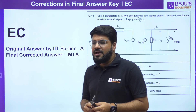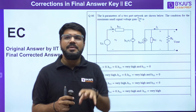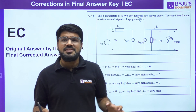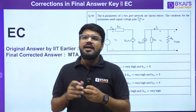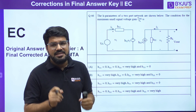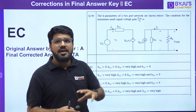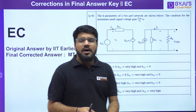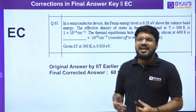The next question is from Networks. The discrepancy here is that the question talks about the h-parameter model, but the diagram doesn't justify the h-parameter model — there is an inconsistency between the diagram and the statement. The original answer given by IIT was 'A' but it has been finally corrected to Marks to All (MTA). This is a benefit even to students who did not attempt the question — everyone gets the positive marks, which is plus two.